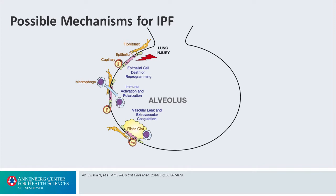Those macrophages then provide the cytokines and interleukins that lead to a vascular leak and extravascular coagulation. And finally, a fibrinous clot, which is meant to seal off the area of injury in a normal process.